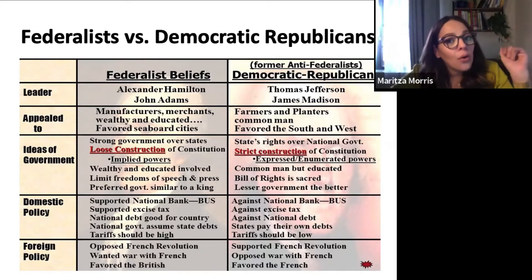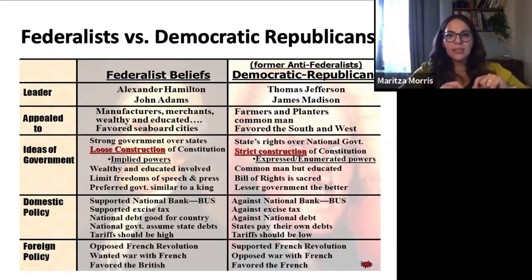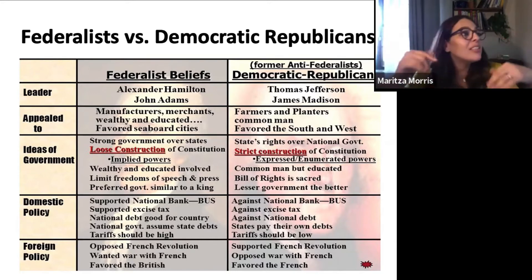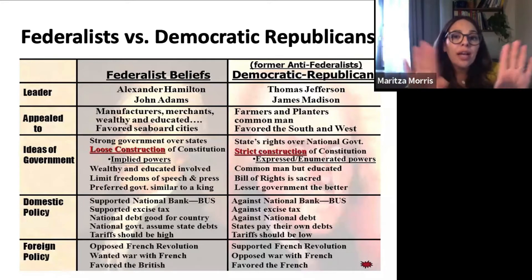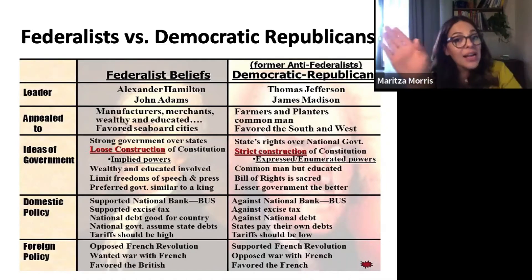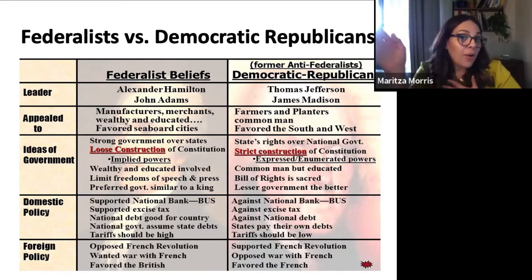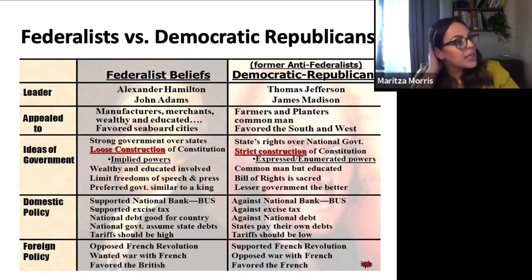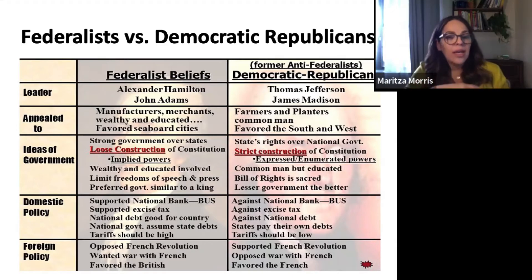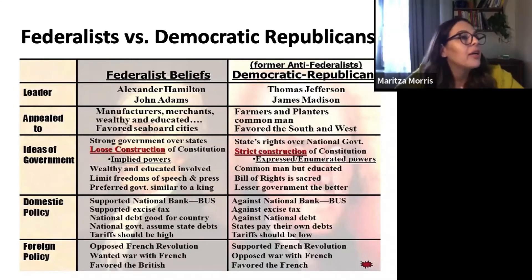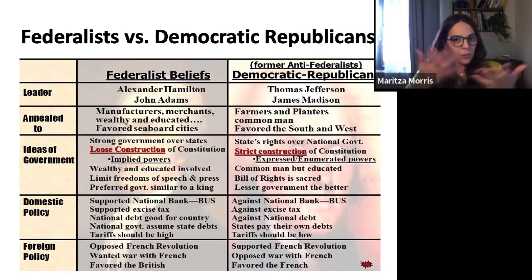Federalists argue that the elastic clause says anything that is necessary and proper, Congress should deal with it. This is where the constitution gets vague and not very specific — part of the reason you're going to have these two political factions. Federalists believe that anything necessary and proper, they can deal with it; whereas those who prefer states to have that power argue the constitution should be interpreted by strict construction — it has to be expressed, enumerated, explicitly written in there, otherwise it belongs to the states.